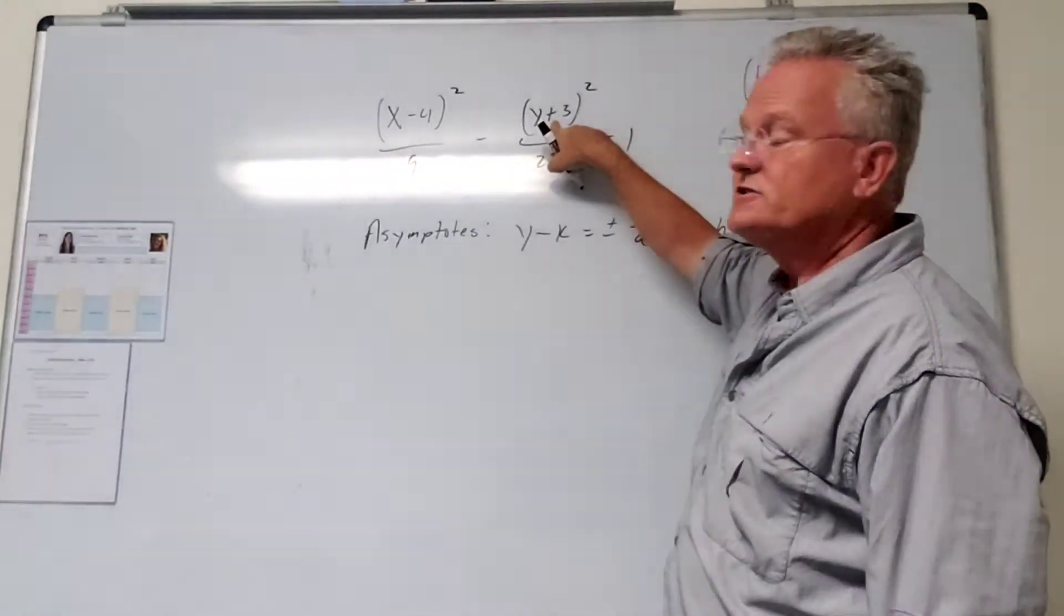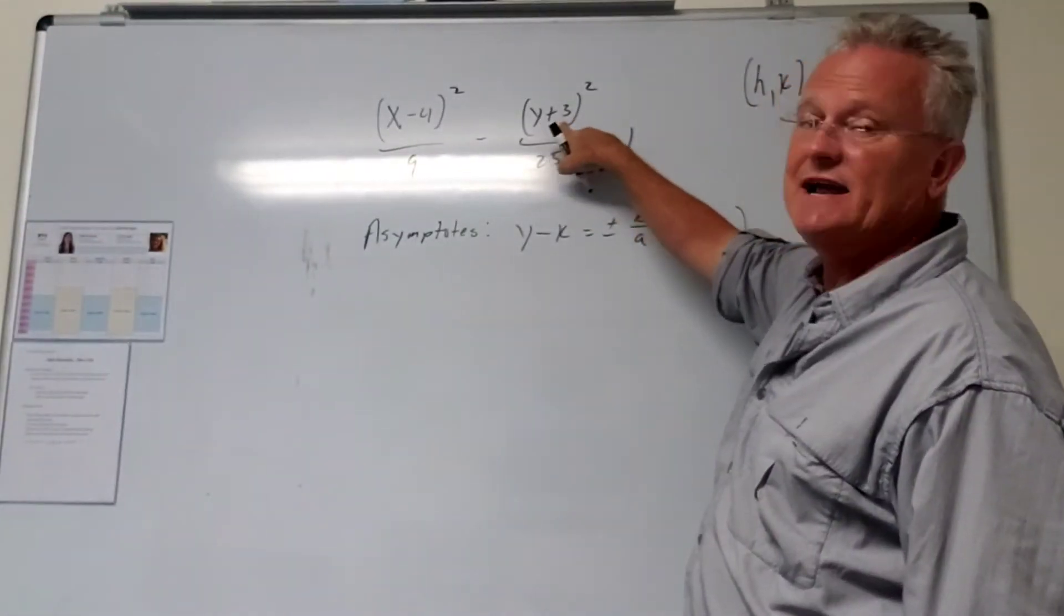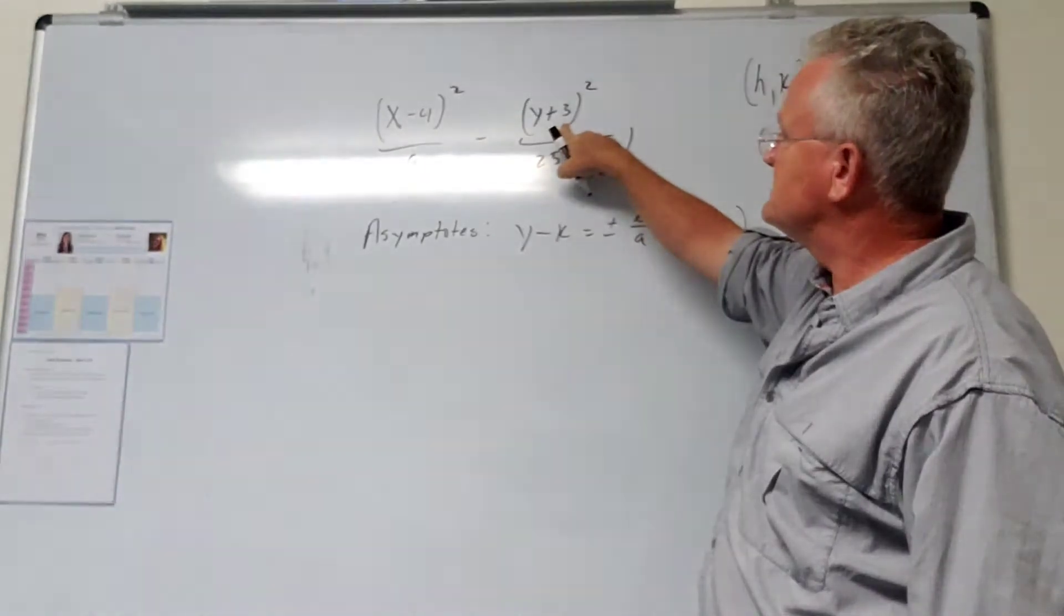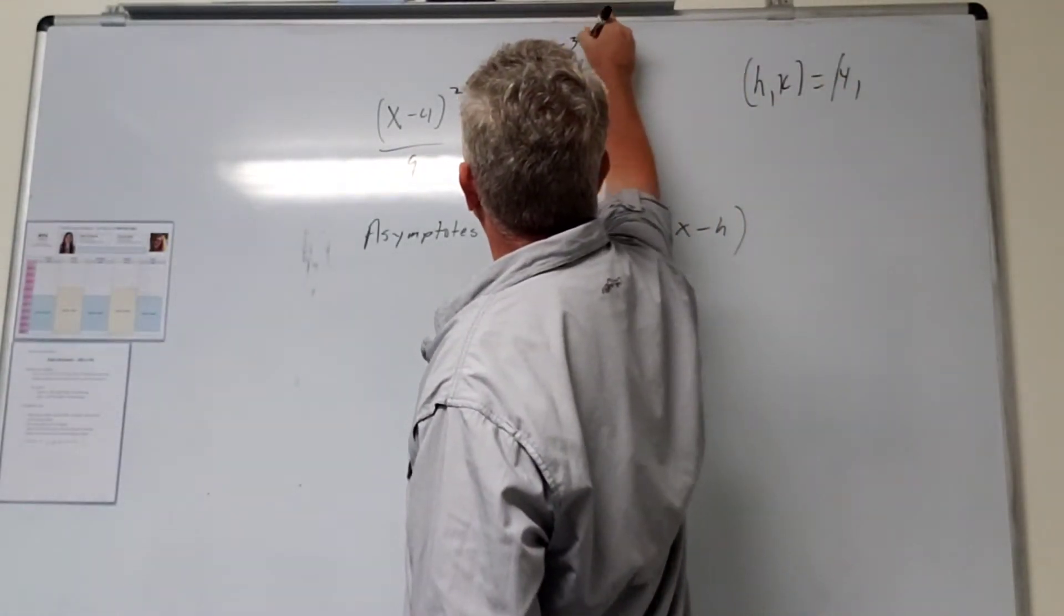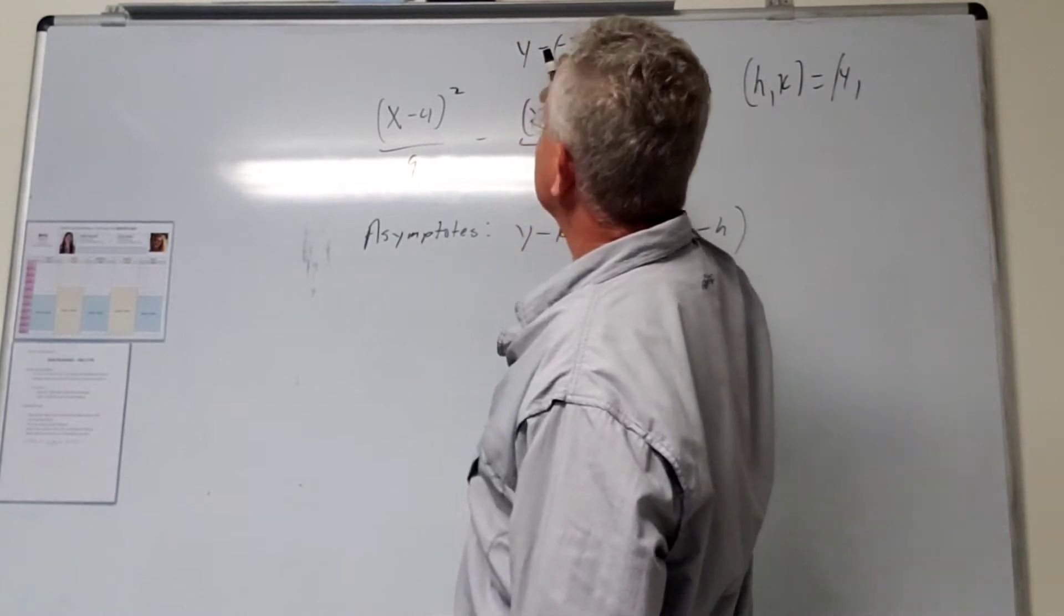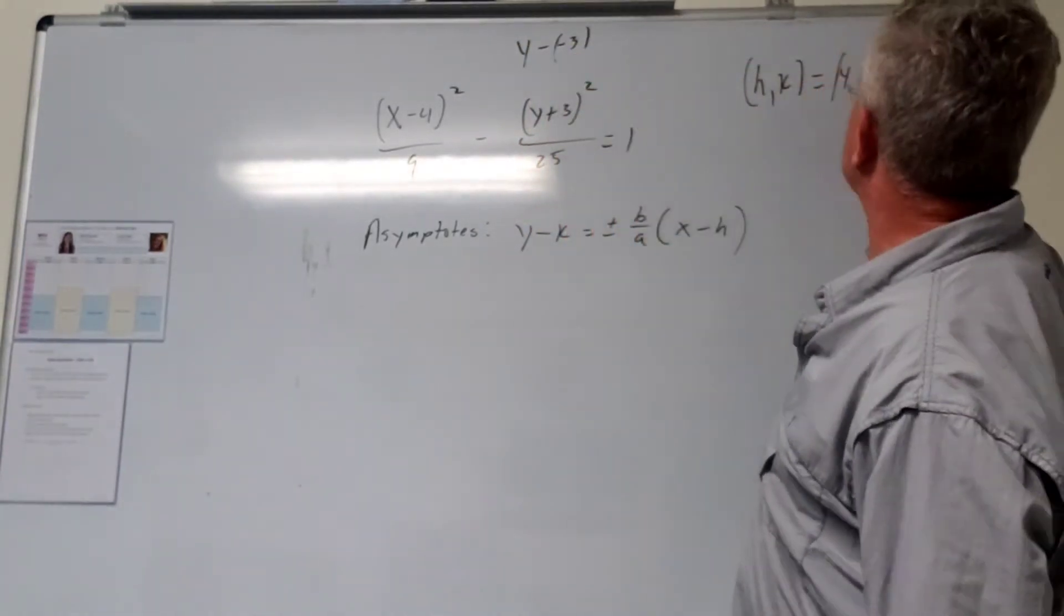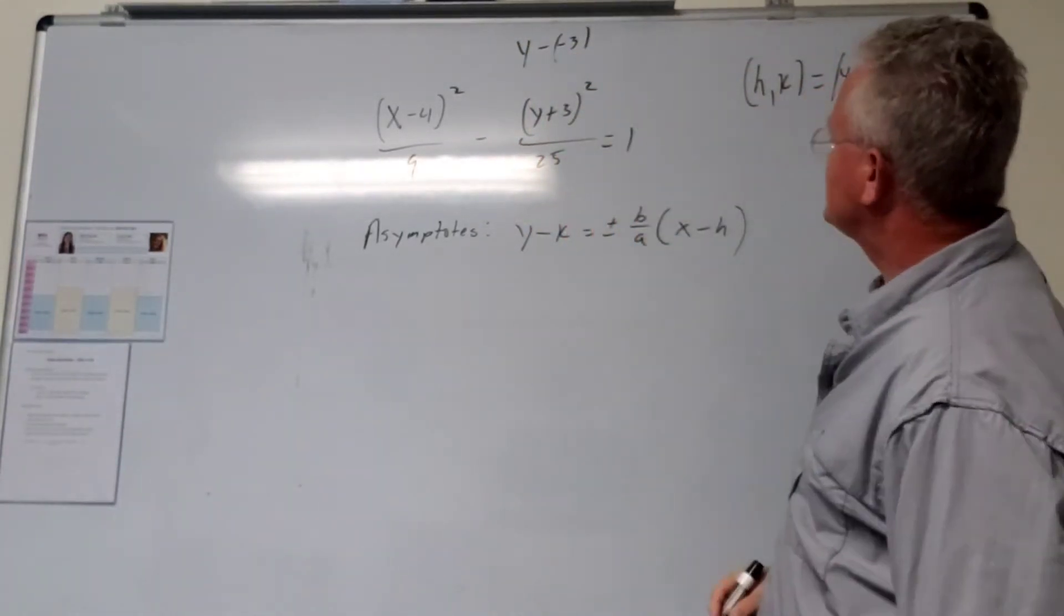We can think of this as y minus a minus 3, because minus minus is a plus. So when we think of it as y minus a minus 3, we have y minus k, where k is negative 3. So there's our h and k.